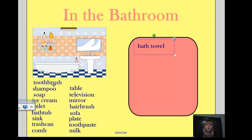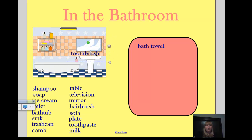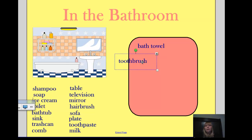I might have them again put the word where they would normally find that object in the picture. For example, where would you find a toothbrush? You would find a toothbrush near the sink, so they might move that over there. And then — you find a toothbrush in the bathroom. So we are going to move that over to all the items that go in the bathroom.